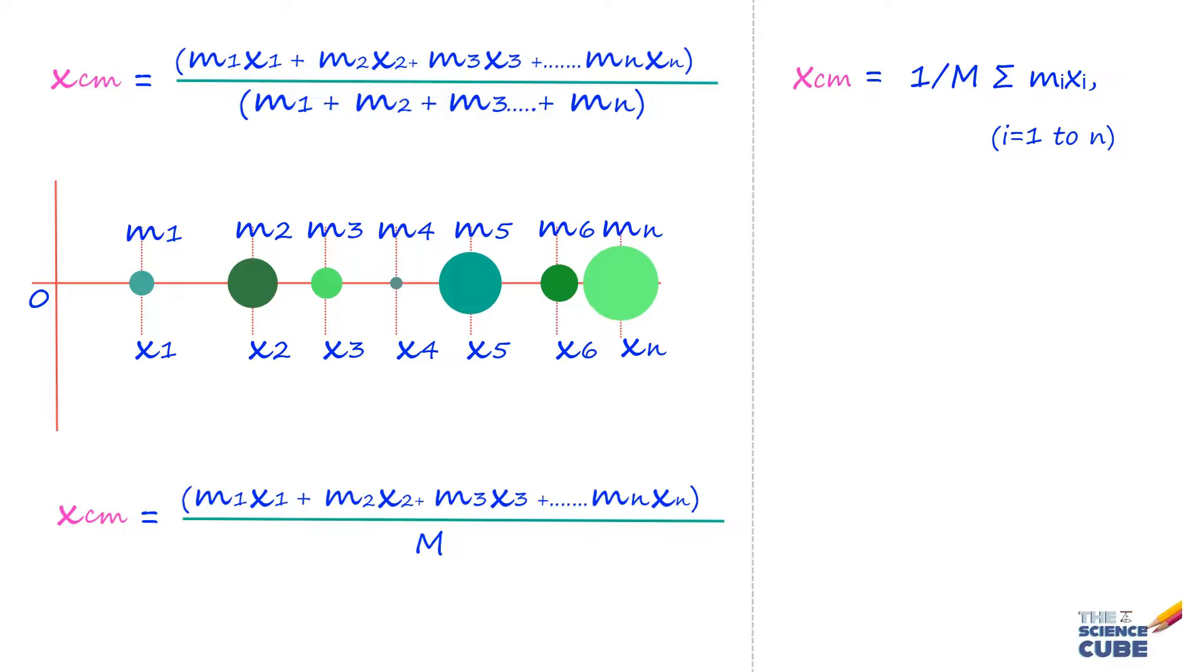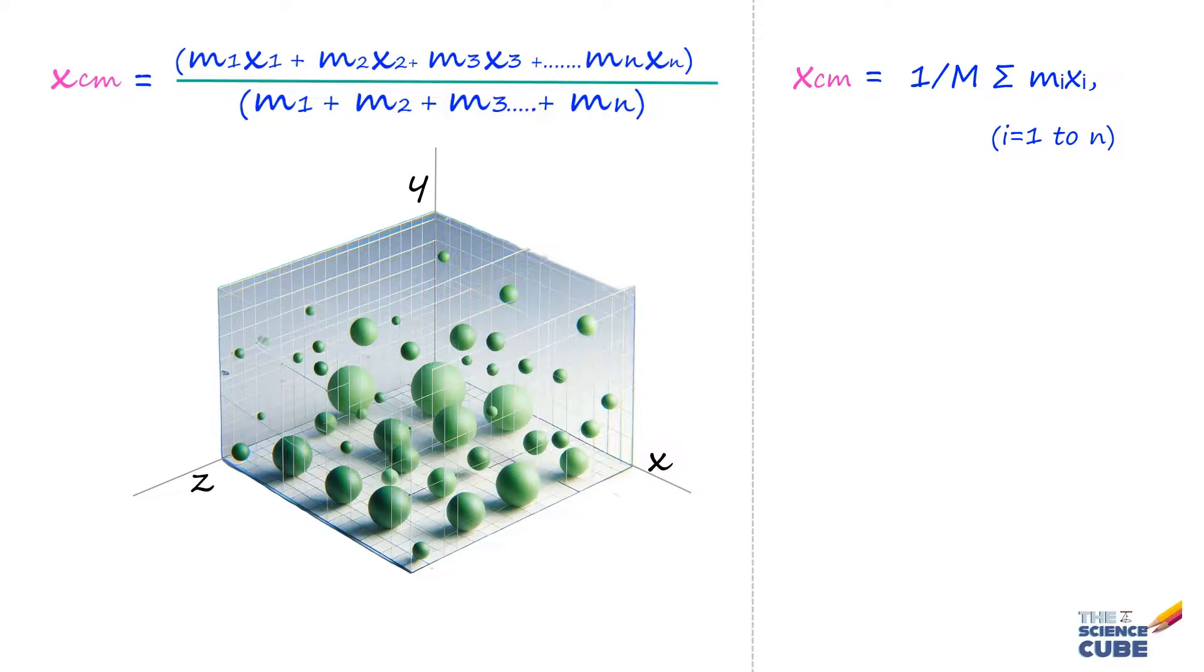Now, if the particles are distributed in three-dimensional space, it makes sense that the center of mass must be represented by three coordinates, that is x, y, and z. Well, to establish y and z coordinates, we can use the same equation, but replace x with y or z.